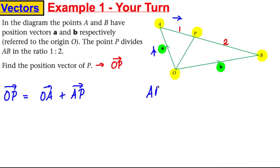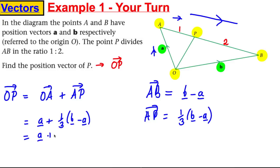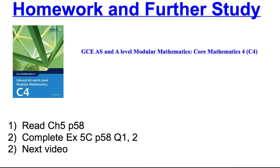To get from A to B the whole distance, using position vectors, that is b subtract a. So to get from A to P, which is one part out of three parts along the way, it's one third of (b subtract a). Therefore OP equals little a plus one third(b subtract a). Expanding: a plus one third b minus one third a, which gives two thirds a plus one third b. This can also be factorized as one third(2a plus b).